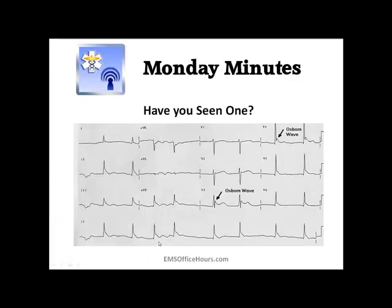Now this next one shows it in V3 and V4 — pretty easy to see it there, and probably if you look close enough in V5 and V6 you can almost make it out as well. If you look at leads 2, 3, and AVF you can probably make out the J wave — more prominent in lead 3 and AVF — but it's most prominent here in V3 and V4.